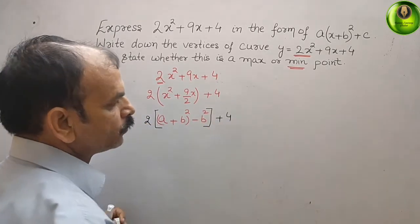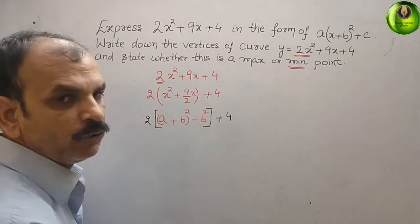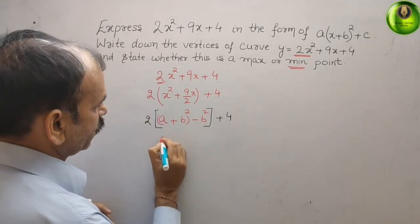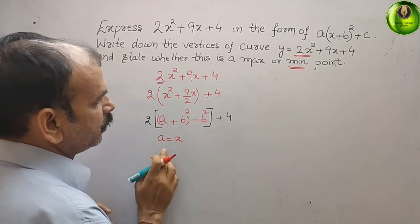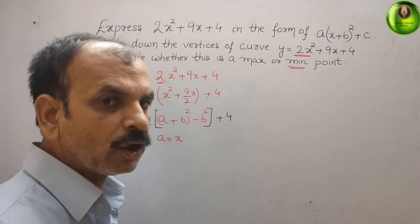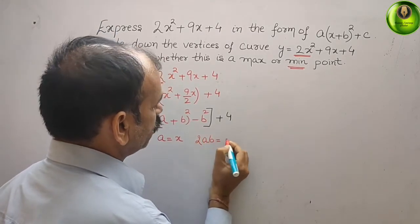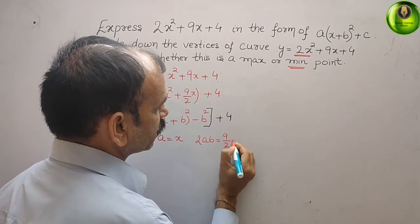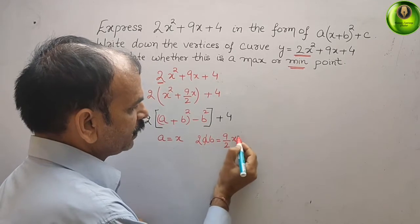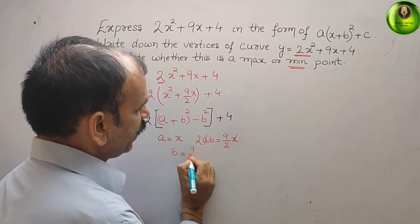Comparing with x², we get a = x. The term 9/2 x corresponds to 2ab, so 2ab = 9/2 x. Since a = x, those cancel, and we find b = 9/4.